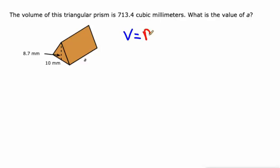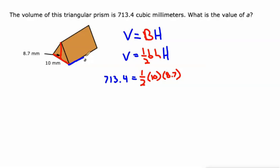So we're going to do volume equals area of the base times the height of the prism. In this case, our base is a triangle. So that would be one half base times height times the height of the prism. We're given the volume 713.4. Our triangle here has a base of 10 and a height of 8.7. And our prism has a height of A. So simplify the right. One half times 10 is 5. 5 times 8.7 is 43.5. So 43.5 A on the right. All we got to do is divide both sides by 43.5. And we get 16.4. So A is 16.4 millimeters.